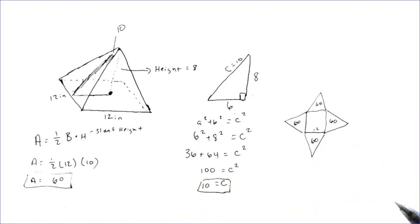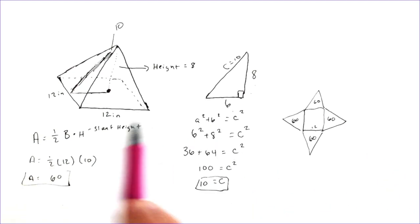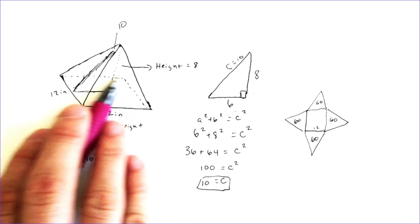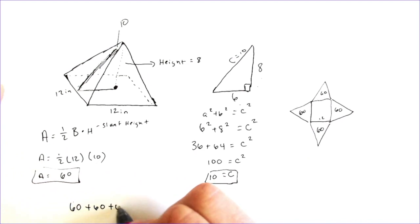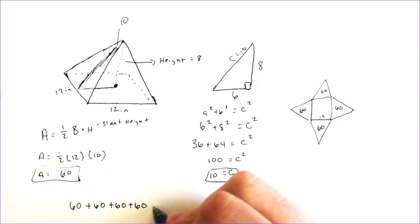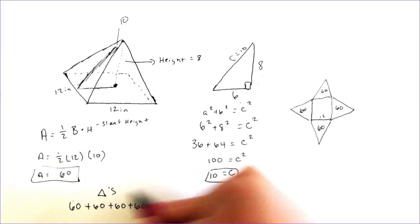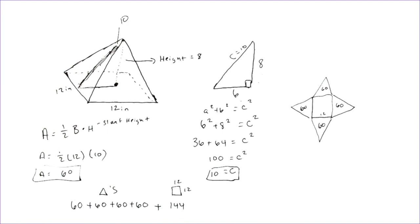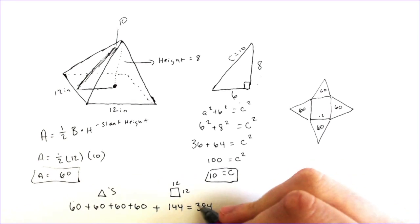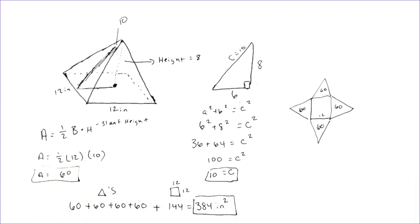Because it had a square base, it's going to be the exact same area for all four triangles. Don't forget the area of the bottom, which in this case is a 12 by 12 square. So our surface area would be all four of the triangles — all four 60s added together — plus the area of the square. Length times width: 12 times 12 makes 144. Adding up all those 60s and then the 144, I get 384 inches squared. That is the final answer.